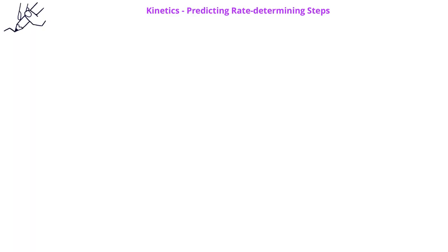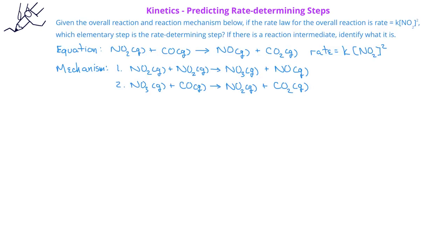Let's apply what we just learned about rate determining steps and reaction mechanisms to a real world problem. In this case, we have a reaction we've seen before where we have one mole of NO2 gas reacting with one mole of CO gas to produce one mole of NO gas and one mole of CO2 gas. We should recall that the rate law for this equation is rate equals K times the square of the concentration of NO2.